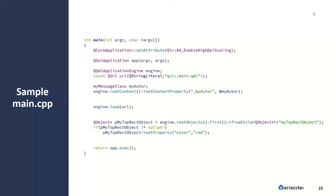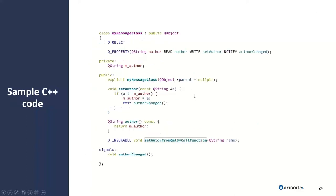Let's have a quick look at the MyMessage class — the one managing the author property. We have the Q_PROPERTY declared with read and write, giving us full capability to define the functions as we want. The signal is authorChanged. Summarizing, we have seen how to export something declared in C++ into QML, and how to export something declared in QML into C++ code.